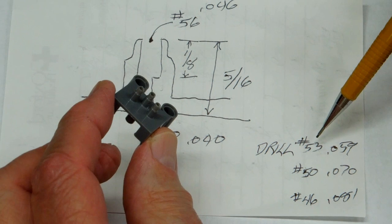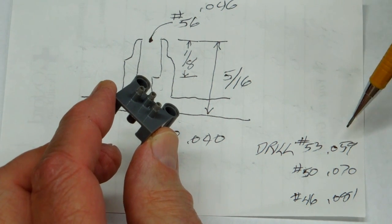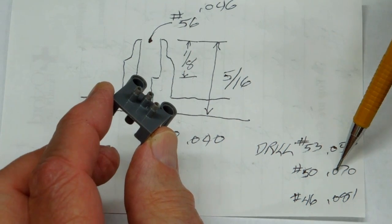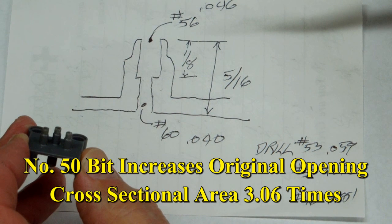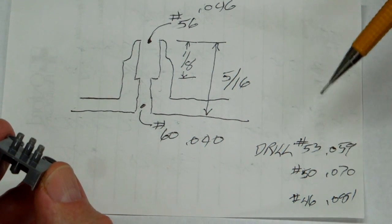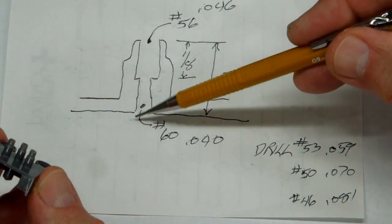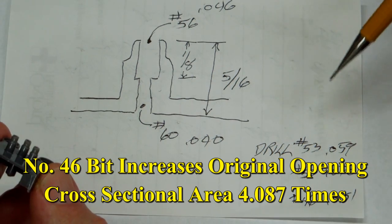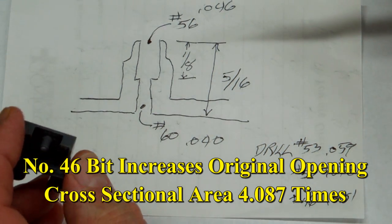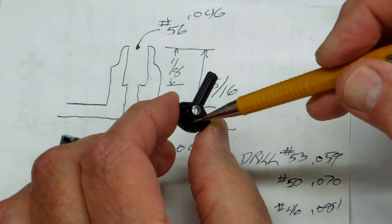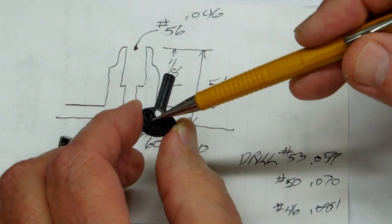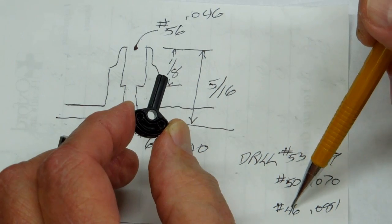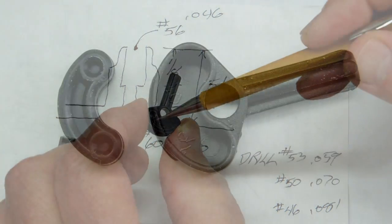I want to increase the size of these holes in three steps. The first bit will be a number 53 which is point 059, followed by a number 50 bit which is point 070. A number 50 bit increases this opening seventy-five percent in diameter or a little over three fold increase in cross-sectional area. The number 46 bit will more than double the diameter of the hole through here and it will be a little over four fold in cross-sectional area. This elongated section in here can easily handle the increase in cross-sectional area of the number 50 bit. It probably can handle most of the number 46 diameter increase, at least it won't be a restriction going through this area.